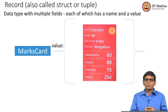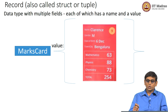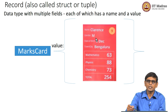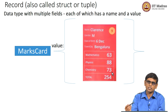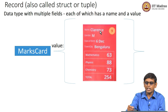For example, we saw the marks card. If you look at a marks card, as shown in the figure, it had basically the sequence number, it had a name, it had a gender, it had a date of birth, city, and the various marks. So this has these fields — these are the fields of this marks card.